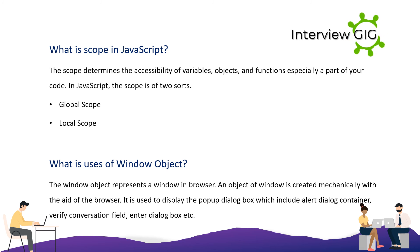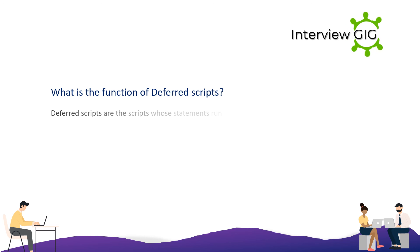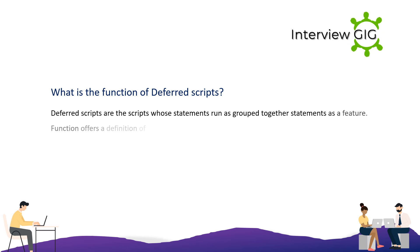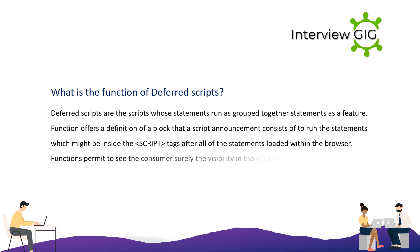What is the function of deferred scripts? Deferred scripts are scripts whose statements run as grouped together. A function provides a definition of a block that a script statement consists of, to run statements that are inside script tags after all statements have loaded in the browser. Functions allow the user to see the visibility within the script tag.